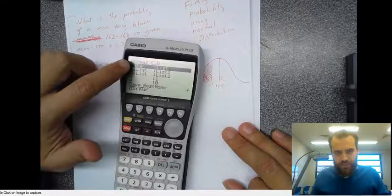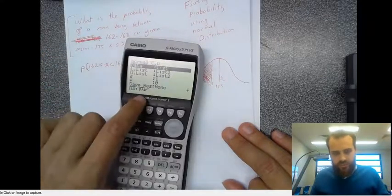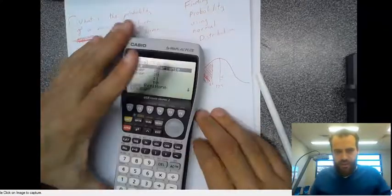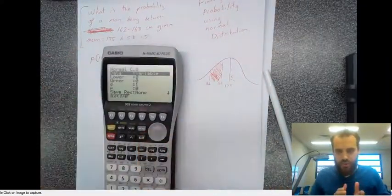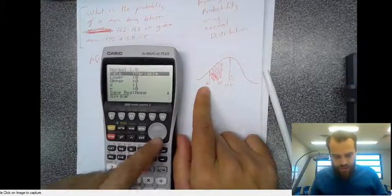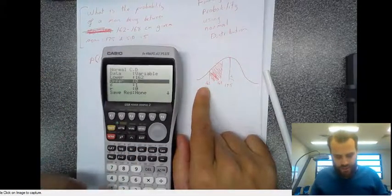Now, mine is coming up with this weird list. We're not using lists. We're always using variables. So we use f2. Now, you just tell it what the lower bound is. So the lowest we want our person to be is 162. The upper is 168.